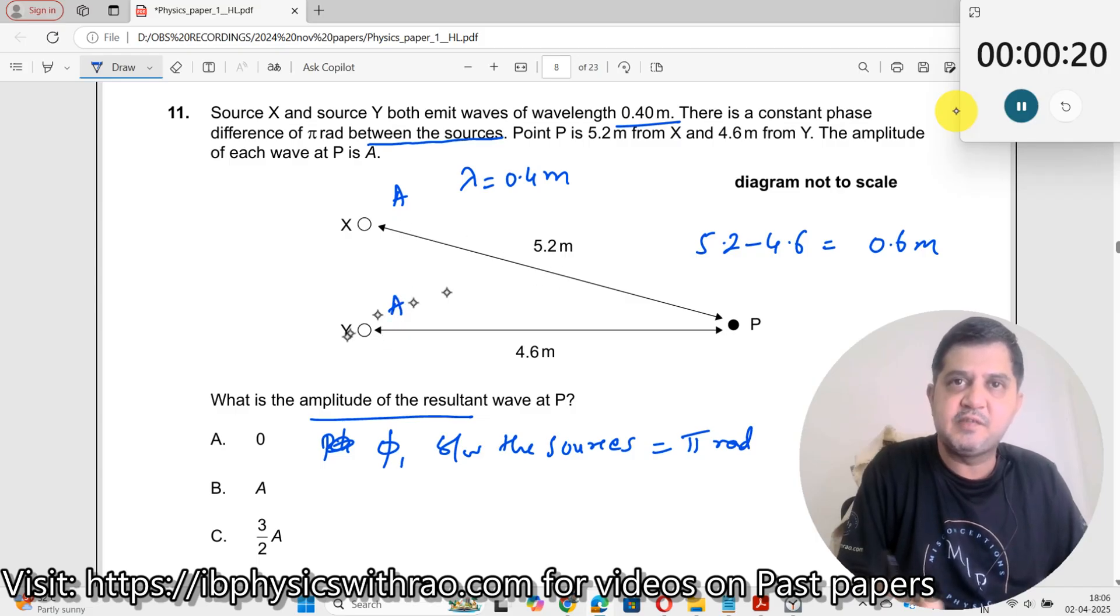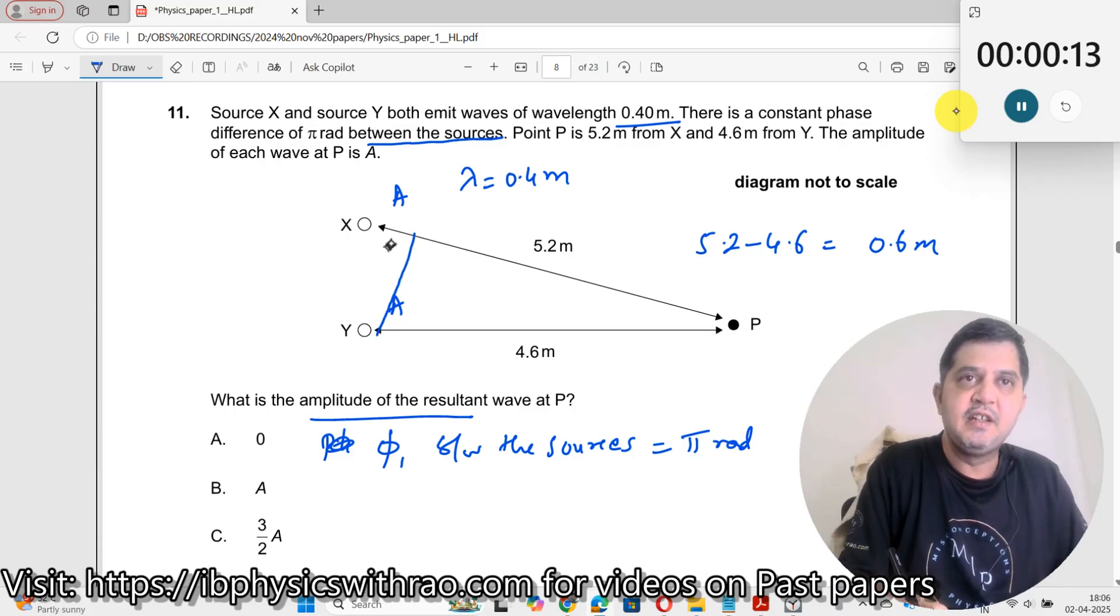If I take, see this is the longest path, this is the shortest path. If I take this as my compass point and draw an arc of a curve, I will get something like this.